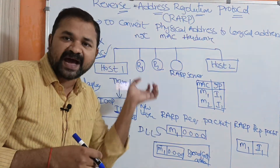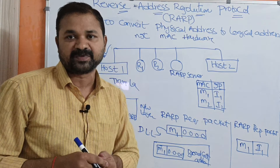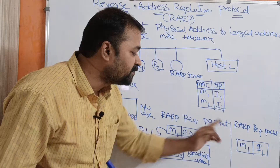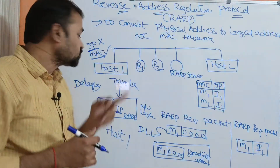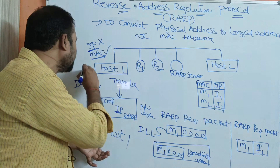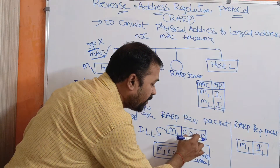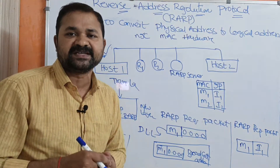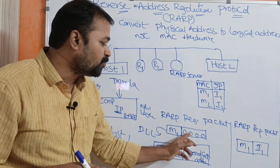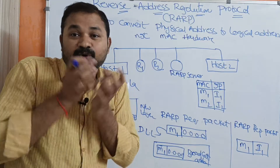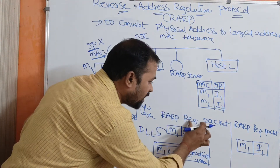Once RARP receives the request from IP, it prepares a RARP request packet. That packet contains the MAC address of host 1 — let the MAC address of host 1 be M1. It also contains the field 0.0.0.0, which specifies that the IP address is not known and we want the IP address based on the MAC address. This is the RARP request packet.